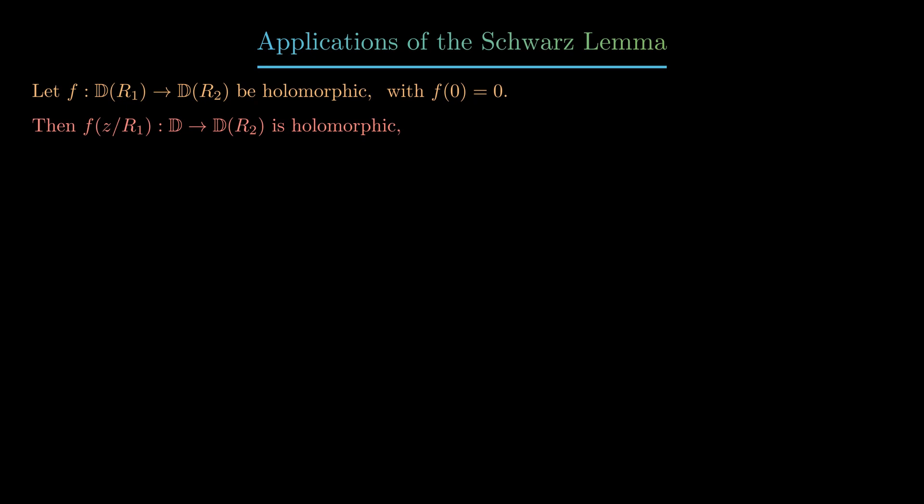And if we divide the image by r2, then we end up with a holomorphic map from the disk to itself.